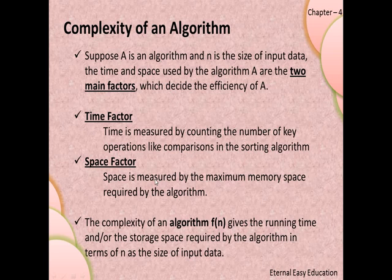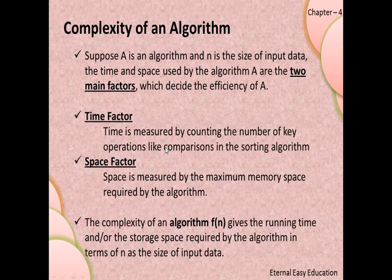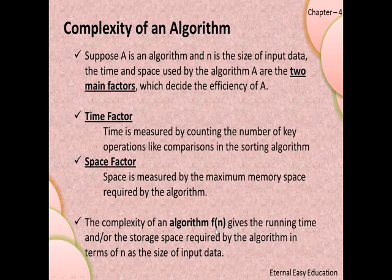The time factor is measured by counting the number of key operations, such as comparisons in a sorting algorithm — that is, the time required to do the operations or calculations. The space factor is measured by the maximum memory space required by the algorithm. The complexity of an algorithm is denoted f(n), and its formula gives the running time and storage space required by the algorithm in terms of n as the size of the input data.